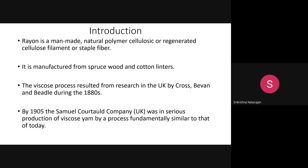It is manufactured from spruce wood and cotton linters — these are the sources of cellulose used as raw material, since wood is rich in cellulose. This is the oldest fiber; research started during the 1880s in the UK by Cross, Brevin, and Biedel. Around 1905, the Samuel Kotal company began serious production of viscose rayon using different techniques.